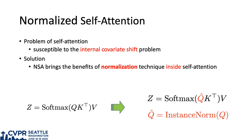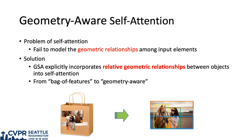We found that self-attention is susceptible to the internal covariate shift problem. NSA addresses this problem by bringing the benefits of normalization techniques inside self-attention.